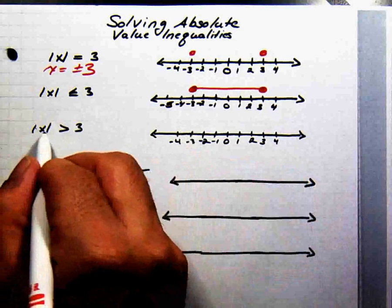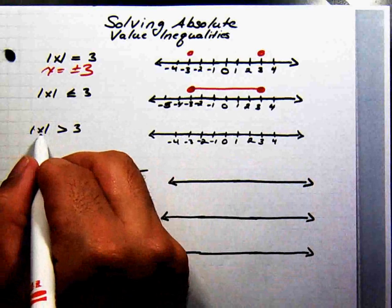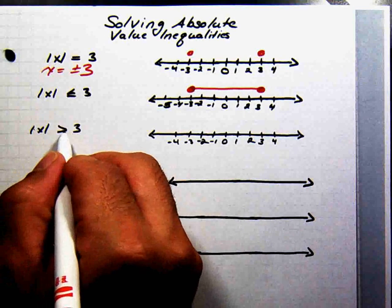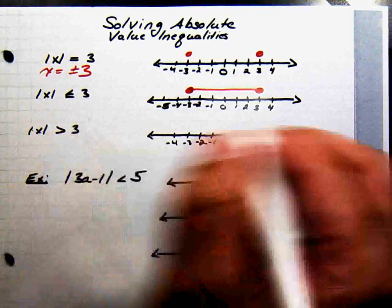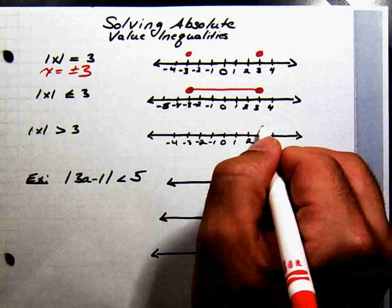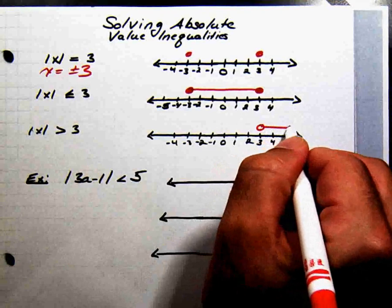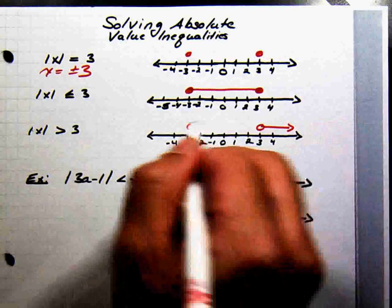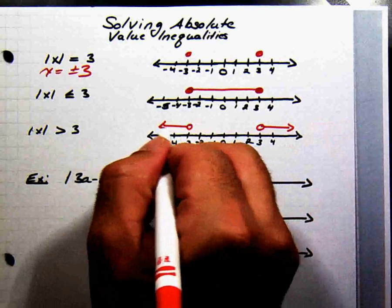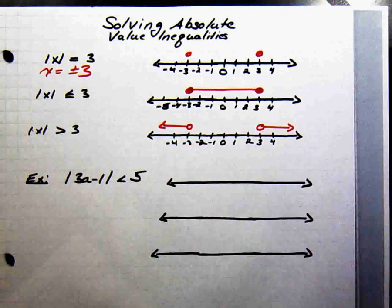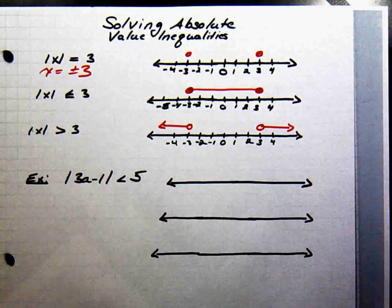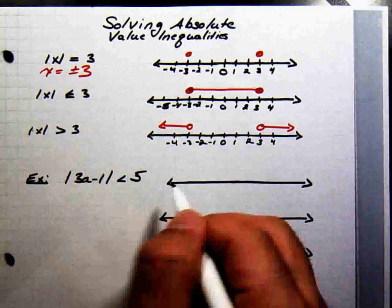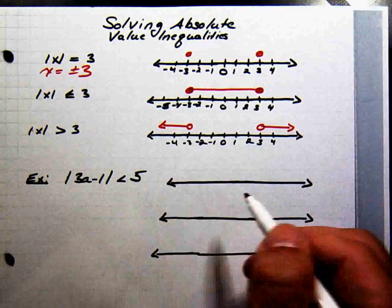This inequality right here says the set of numbers whose distance away from 0 is greater than 3 — from 3 all the way to positive infinity, and from negative 3 all the way to negative infinity. Now I think we're ready to look at solving an absolute value inequality.